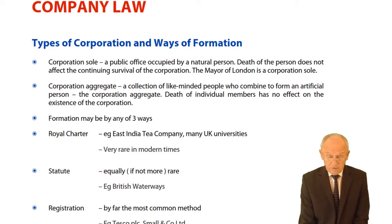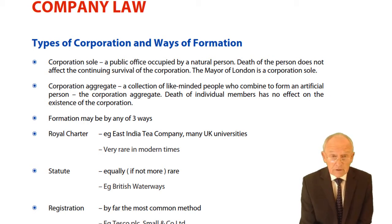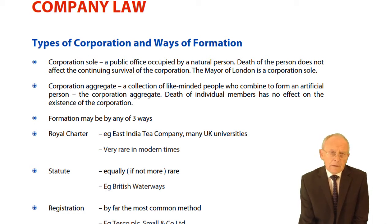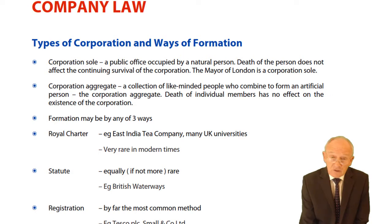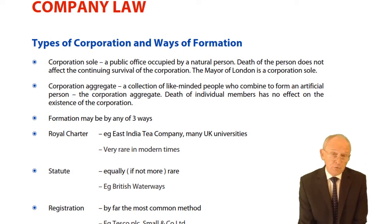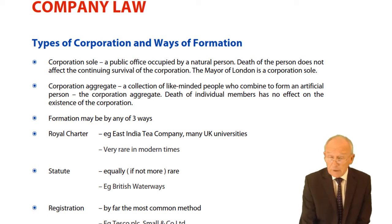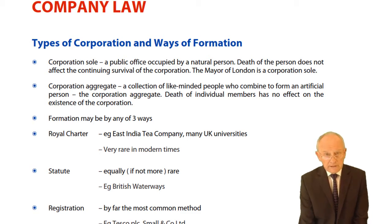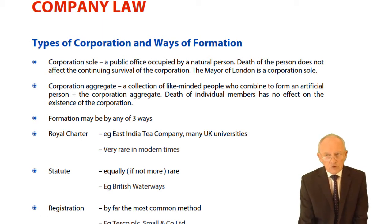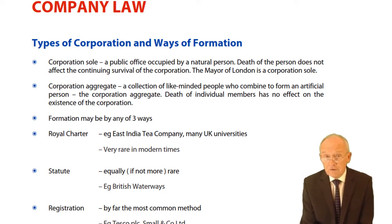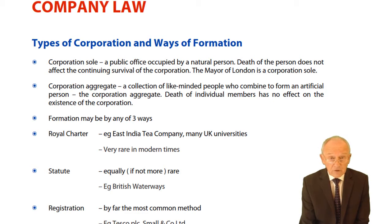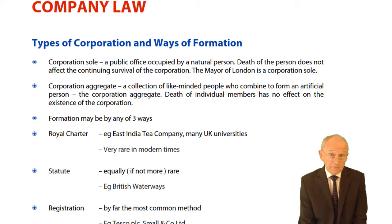For example, the mayor of London is a corporation sole — a public office occupied by an individual person. That person dies, moves on, retires, resigns, or is deselected, but the office of mayor of London will continue. A corporation aggregate is a collection of like-minded people that have decided to get together and create themselves into a separate legal entity. It's not the same as a partnership, which does not have a separate legal existence or identity.